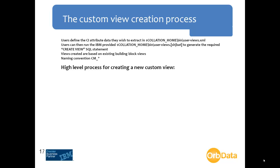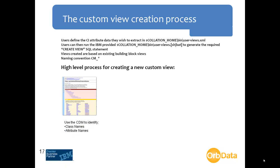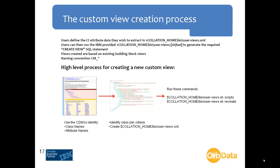There are three basic steps required when creating a custom view. Step 1: Identify the class, attribute, and relationship information from the CDM. Step 2: Identify the class join criteria and create your userviews.xml file. Step 3: Run the userviews script. You will need to supply two switches to the script — the first switch is 'scripts', which builds an SQL command file, and the second switch is 'recreate', which actually creates the database view.